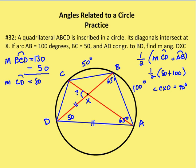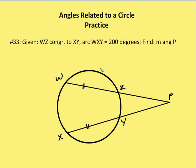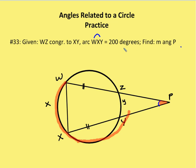Moving on to the next problem. A circle with a secant-secant angle using two secants: WZ is congruent to arc XY. Arc WXY is 200 degrees — let's mark that up. I need to find the measure of angle P. I know that the measure of angle P is going to be one-half the difference of arc WX and arc ZY.